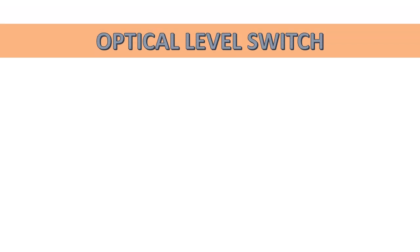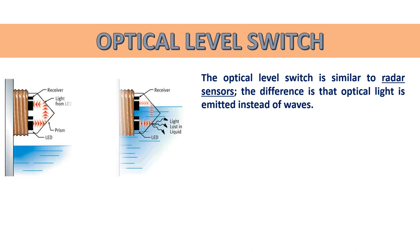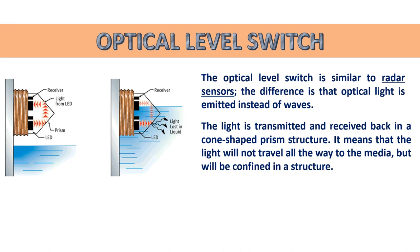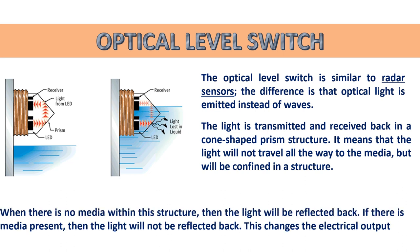The optical level switch is similar to radar sensors, but optical light is emitted instead of waves. The light is transmitted and received back in a cone-shaped prism structure, meaning the light is confined within that structure rather than traveling all the way to the media. When there is no media within this structure, the light is reflected back. If media is present, the light is not reflected back, and this changes the electrical output.